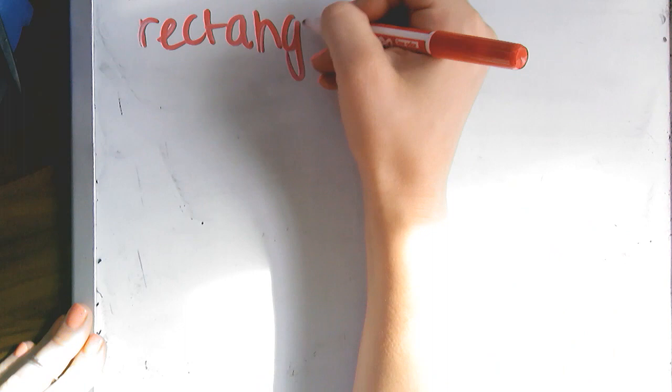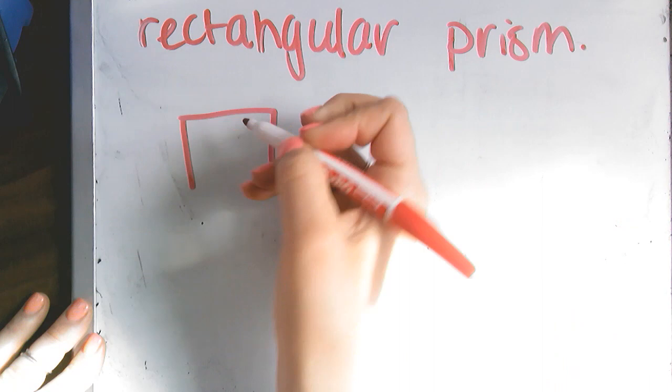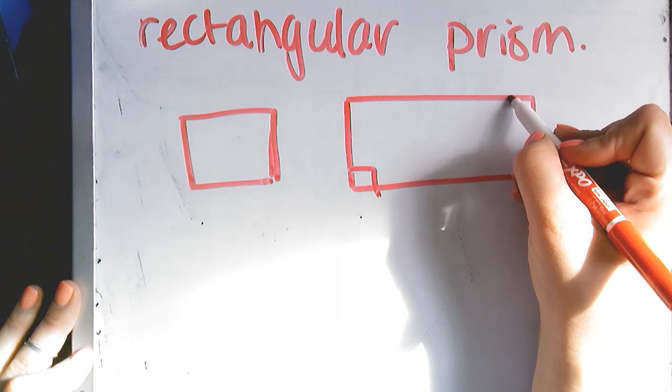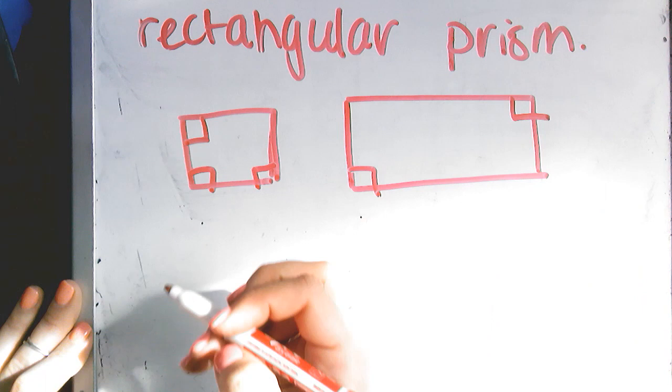Now, a rectangular prism is any type of rectangle. So you'll remember that a rectangle is something that has four sides, and these sides are parallel and they come together at 90 degrees. So those are some rectangles.